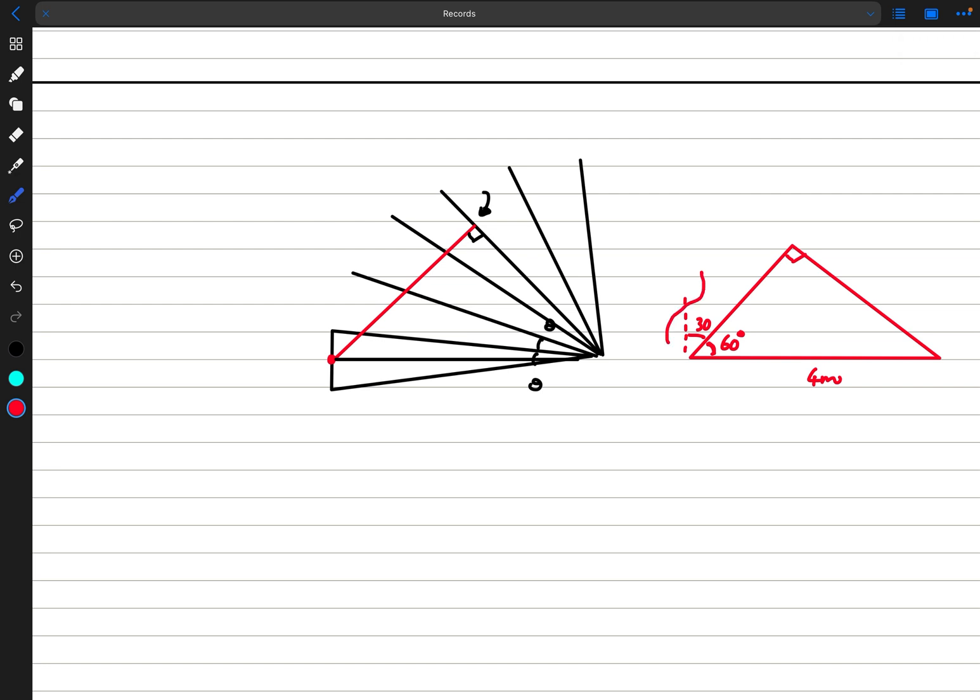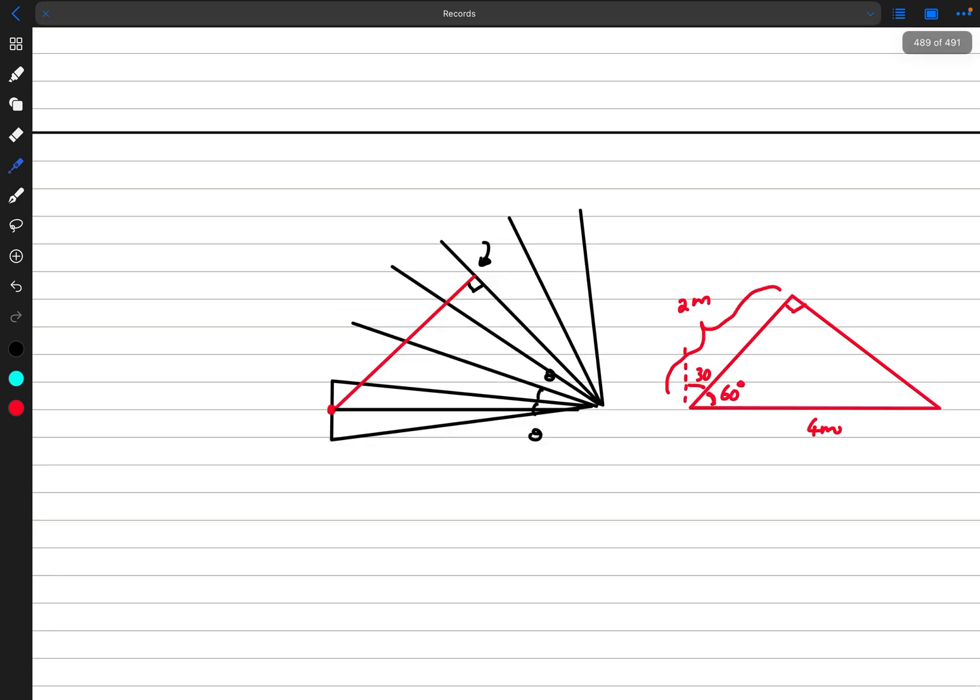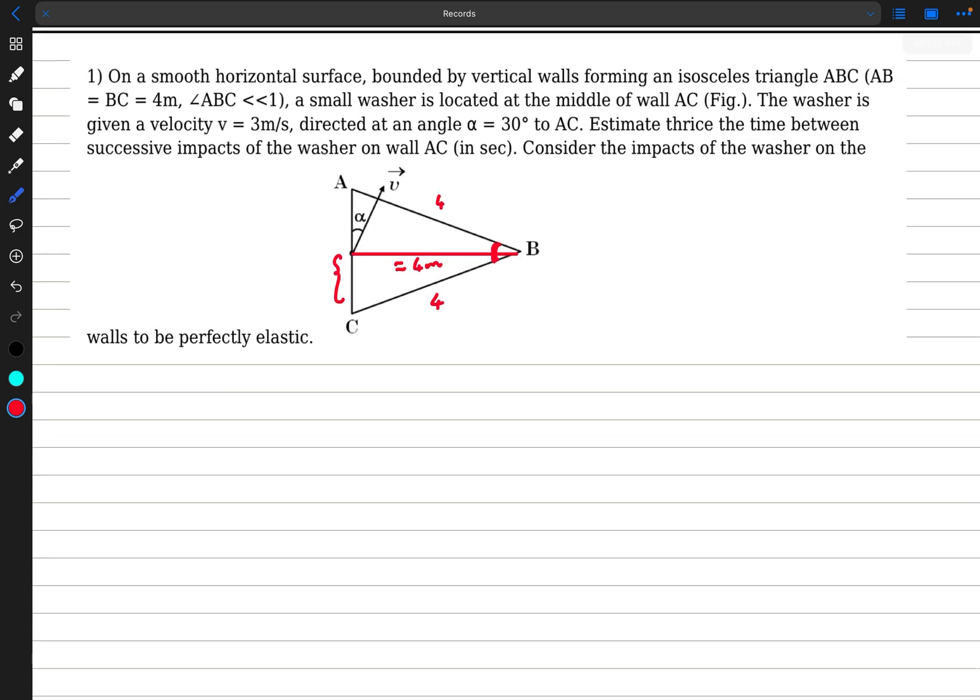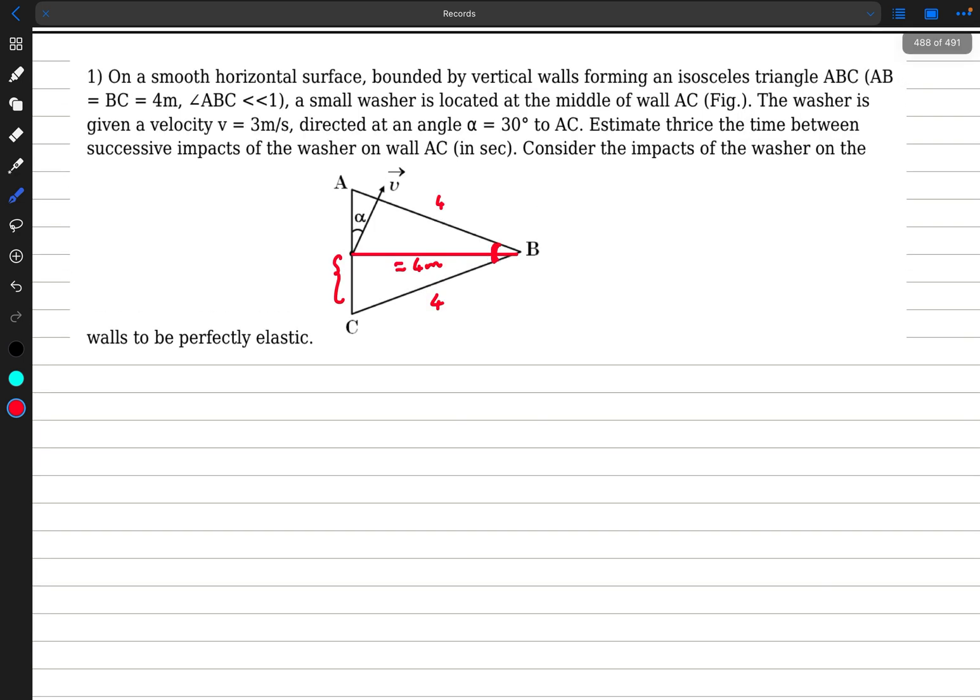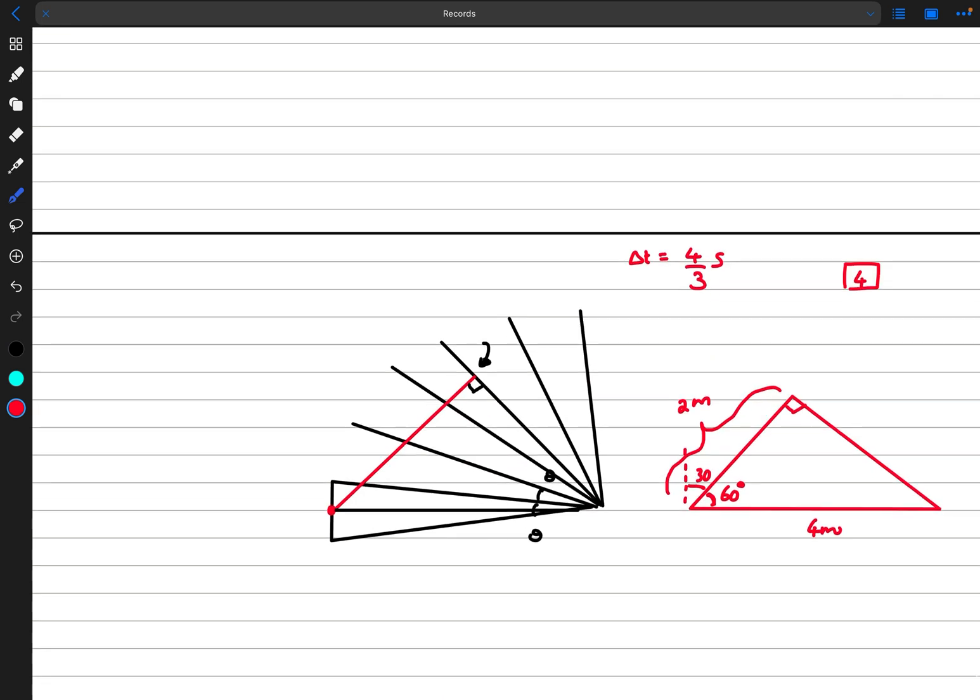So the base of this triangle would be approximately 4 meters, so this distance over here is going to be 2 meters. So the distance traveled by the particle before it intercepts one of the mirrors perpendicularly is going to be 2 meters. And it's given that the speed of the particle is 3 meters per second. So the time it takes to go 2 meters in this direction and come back 2 meters is actually 4 by 3. So the delta t is going to be 4 by 3 seconds. What they wanted is what is 3 times the delta t, so 3 delta t is just 4. So that's the answer.